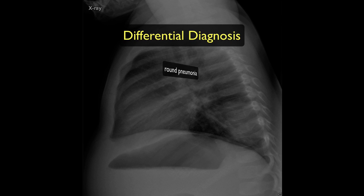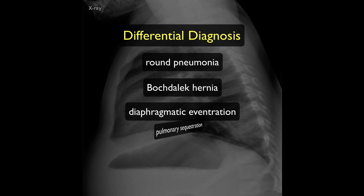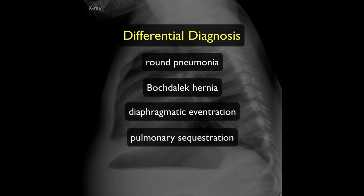These include round pneumonia, Bochdalek hernia, diaphragmatic eventration, pulmonary sequestration, and other pulmonary masses, pleural masses, or even a neurogenic tumour such as neuroblastoma.